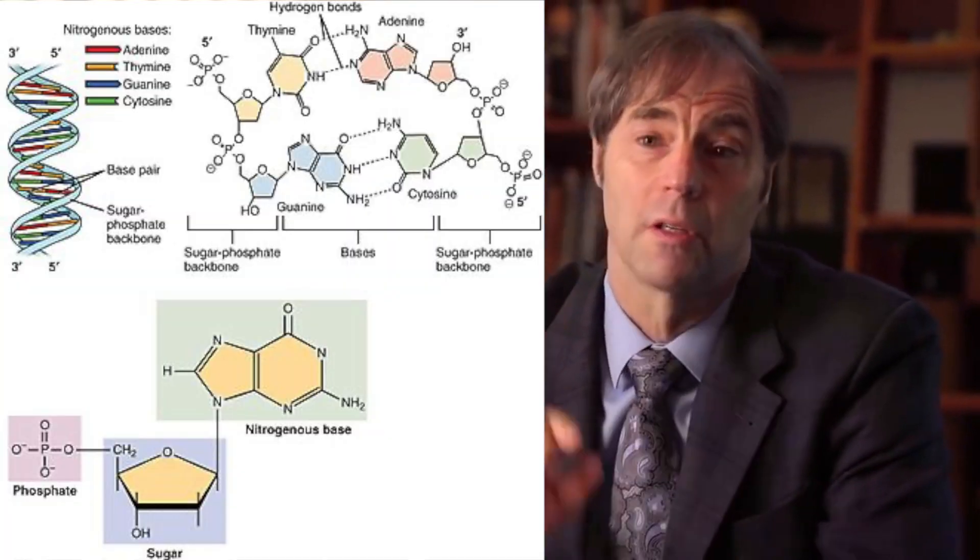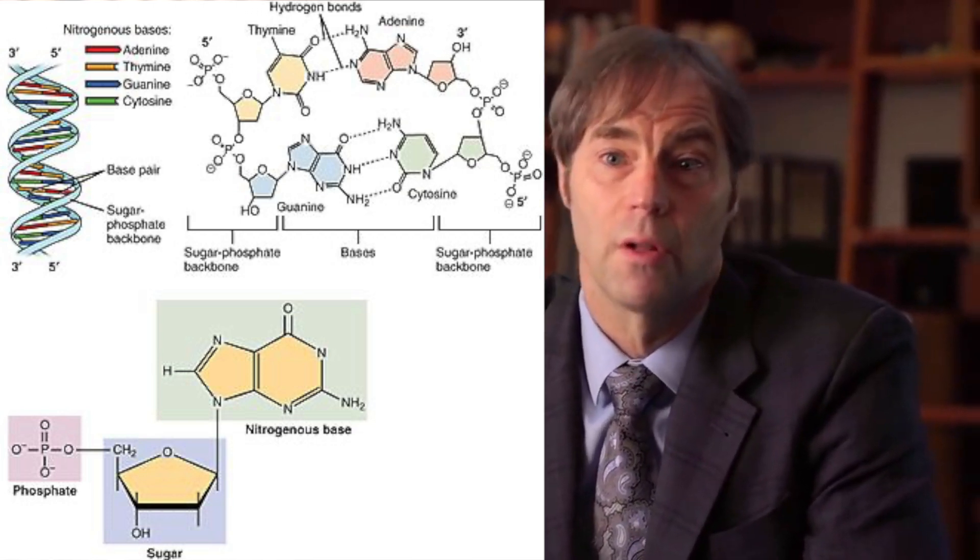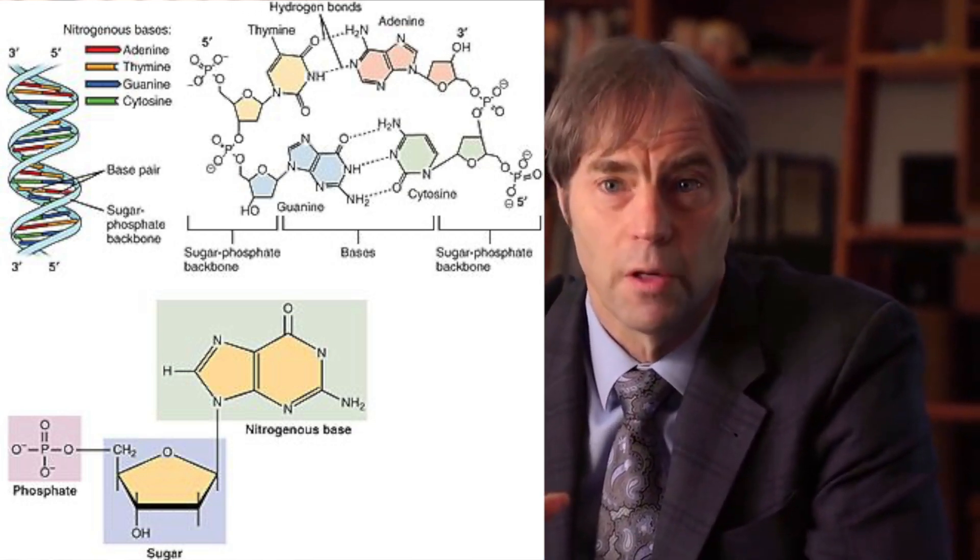That occurred in 1953 when Watson and Crick determined that DNA had a double helix structure, along the inside of which were these four chemical subunits called bases or nucleotide bases. Four years later, Crick took that discovery one step further and realized that those chemical subunits were functioning just like alphabetic characters in a written language or digital characters like the zeros and ones we use in software.